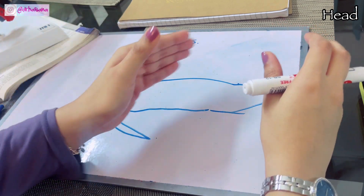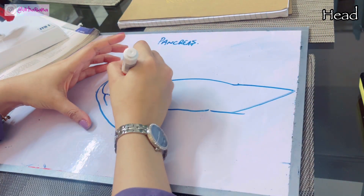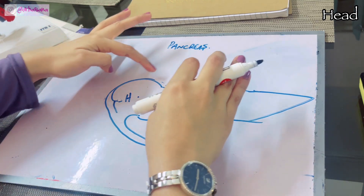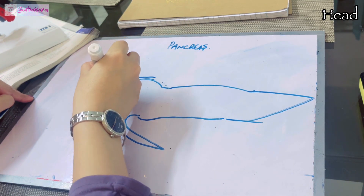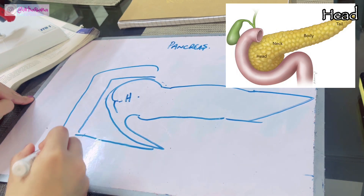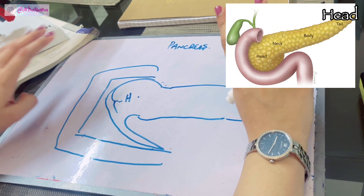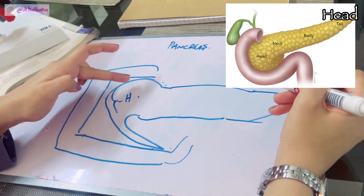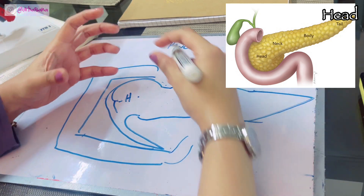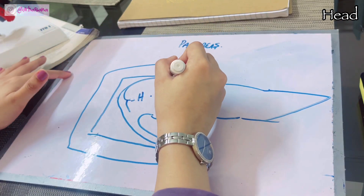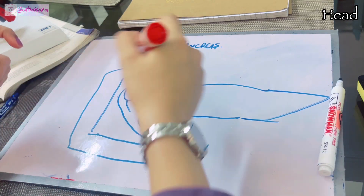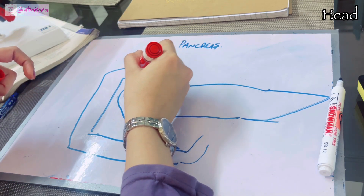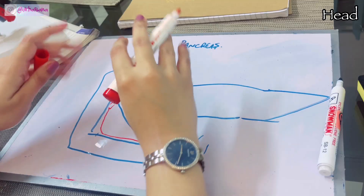Let's talk about the head of the pancreas. The head is completely related to the duodenum — the C-shaped curvature of the duodenum is where the head of the pancreas is fixed. The duodenum has four parts: first horizontal, second vertical, third horizontal, and fourth vertical. The superior pancreaticoduodenal artery lies in the groove between the duodenum and the pancreas superiorly, and the inferior pancreaticoduodenal artery lies inferiorly.